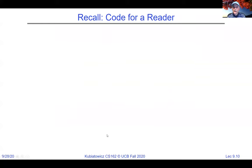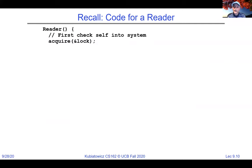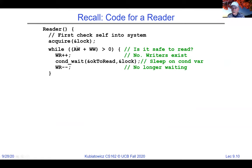Here's the reader code. A reader first acquires the lock, entering the monitor. Then we loop: while there's either an active writer or a waiting writer (AW + WW > 0), we increment the waiting reader count (WR++) and go to sleep on the ok_to_read condition variable, passing the lock. When we wake up, we decrement the waiting reader count because we're no longer waiting. We keep looping — checking conditions, sleeping, waking — until AW + WW equals zero. That's the writer priority.